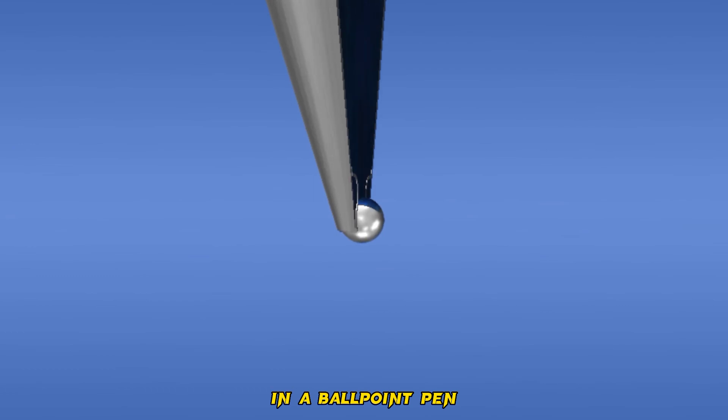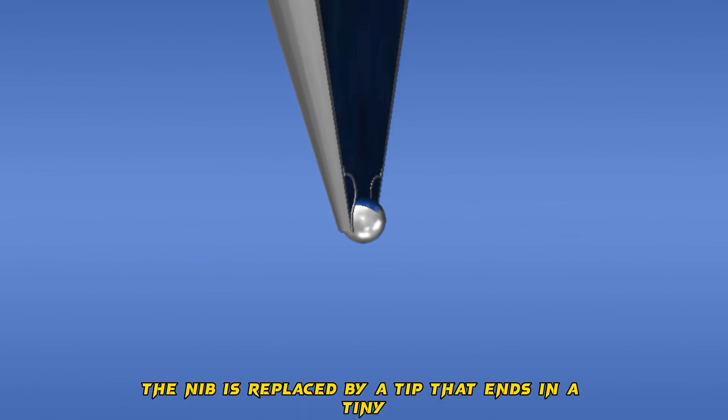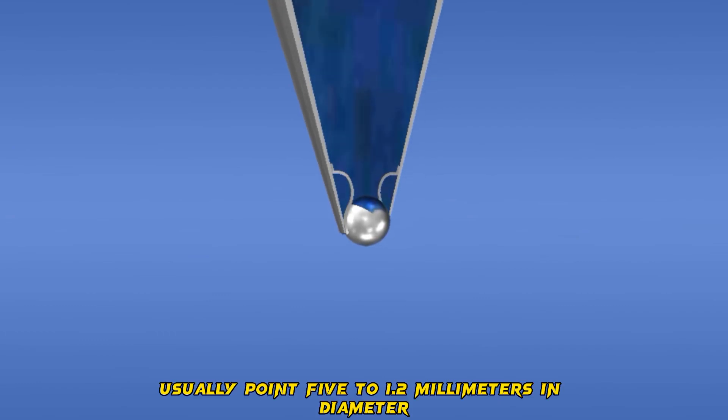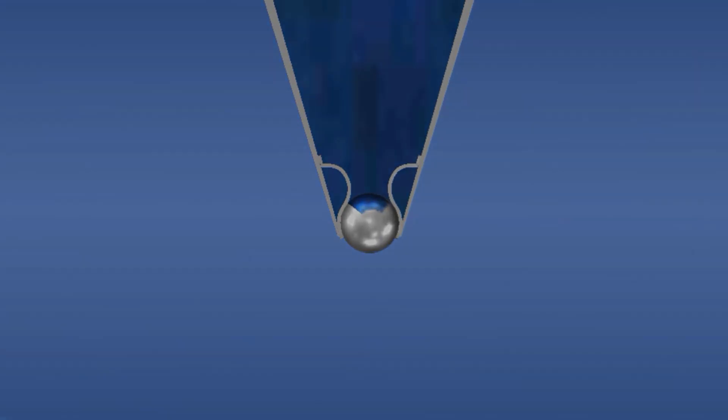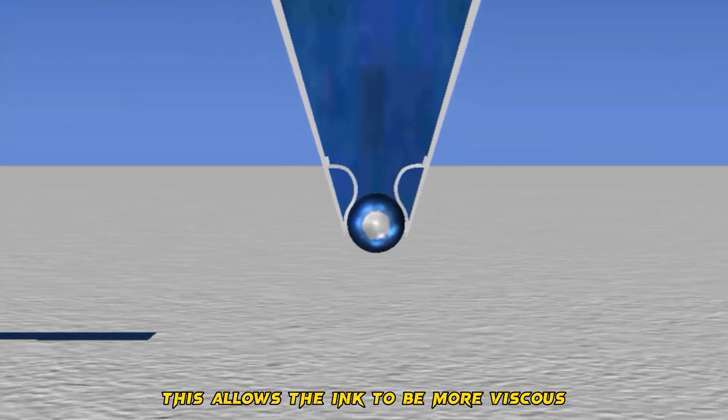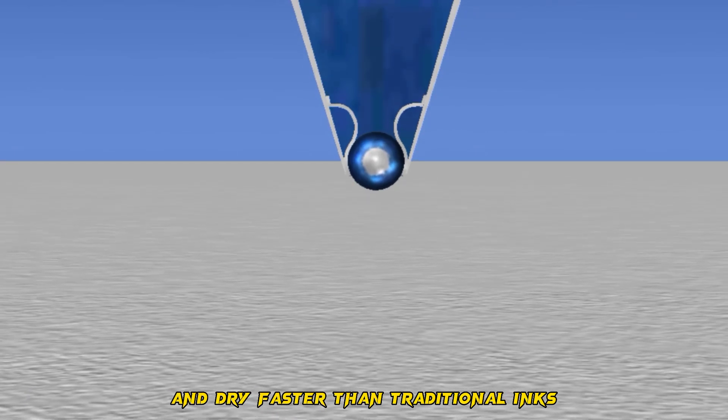In a ballpoint pen, the nib is replaced by a tip that ends in a tiny rotating metal ball, usually 0.5 to 1.2 mm in diameter. This allows the ink to be more viscous and dry faster than traditional inks.